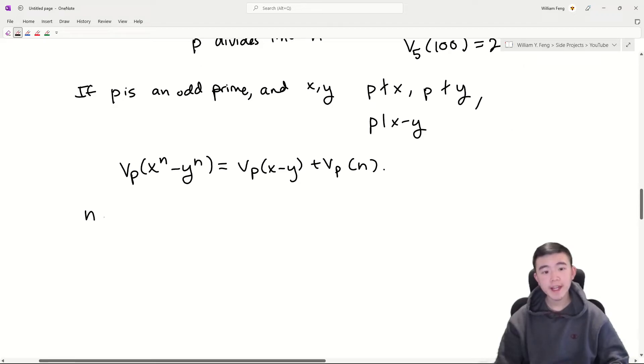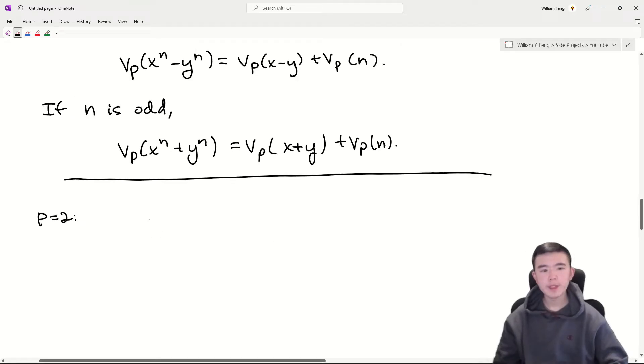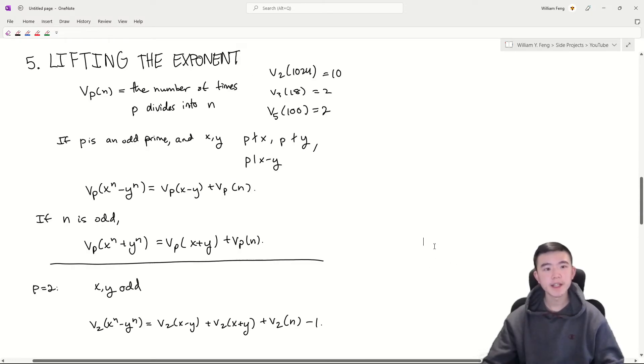Furthermore, if n is odd, then we can simply take y to be negative y to get vp of x to the n plus y to the n is equal to vp of x plus y plus vp of n. Now you might be wondering what happens when p equals 2. This is a special case. We need x and y to be odd. It tells us that v2 of x to the n minus y to the n is equal to v2 of x minus y plus v2 of x plus y plus v2 of n minus 1. And that is lifting the exponent.